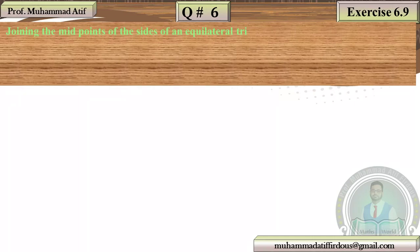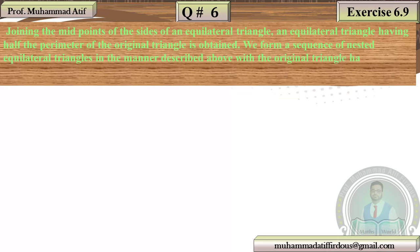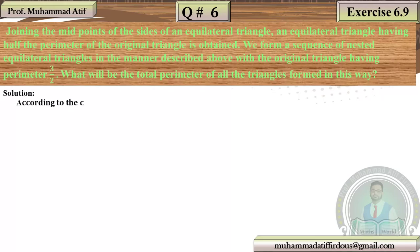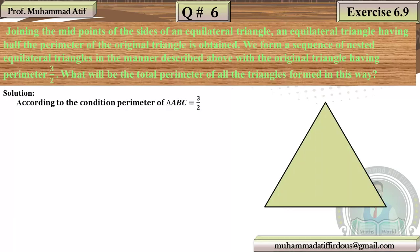The last question is number 6. Stones on the sides of an equilateral triangle — a new equilateral triangle having half the perimeter of the original triangle is obtained. We form a sequence of nested equilateral triangles in this manner. The original triangle has perimeter = 3/2. What will be the total perimeter of all triangles formed this way?